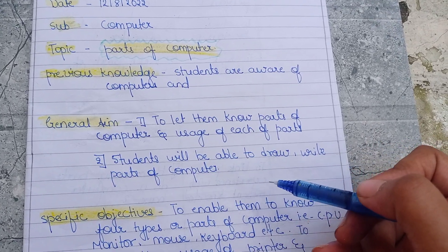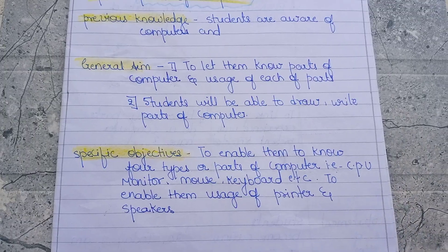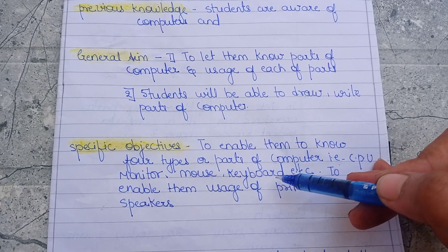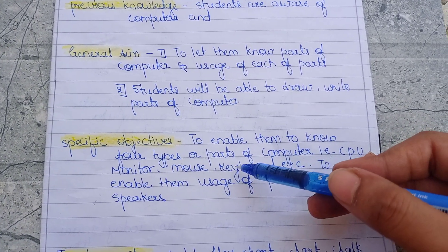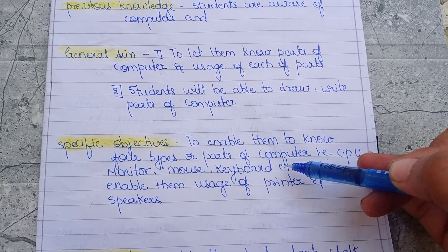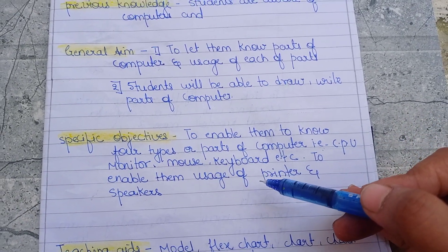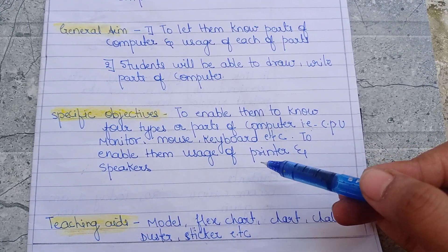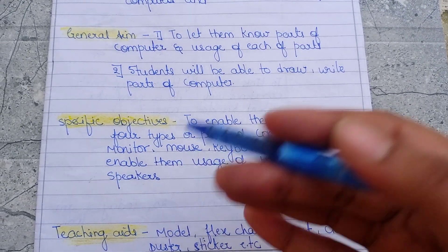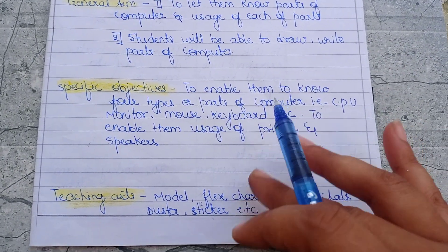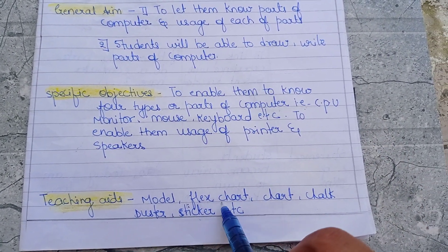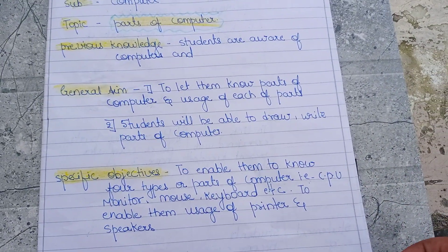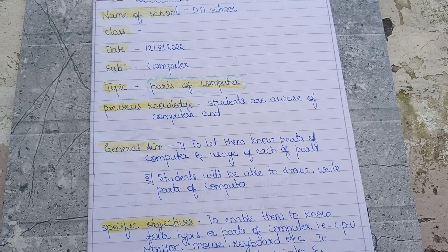Students will be able to draw parts of computer. The specific objectives are: to enable them to know four types of parts of computer — CPU, monitor, mouse, keyboard — and also to enable them to know the usage of printer and speakers, which are also parts of the computer. Teaching aids include model, flex chart, chart, chalk, duster, sticker, etc. — whatever we are going to use while teaching.